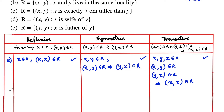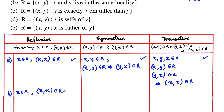Let's consider the second one, (b): r = {(x, y) such that x and y live in the same locality}. It gives the same result as the first problem. For a person x belonging to A, he himself will be living in the same locality, so (x, x) belongs to r. It is reflexive.